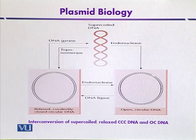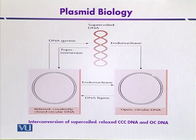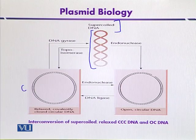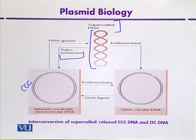This can be explained with the help of a diagram showing the enzymatic interconversion of supercoiled DNA into CCC DNA or OC DNA. As shown in the diagram, plasmid DNA isolated from bacteria is mostly present in supercoiled form. It can be converted into covalently closed circle DNA (CCC DNA) by treating it with enzymes like topoisomerases, producing relaxed or covalently closed circle DNA.